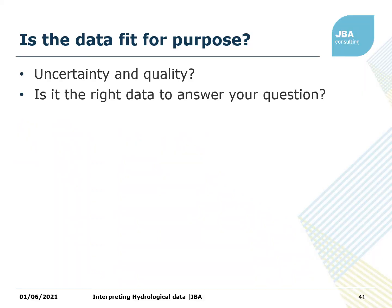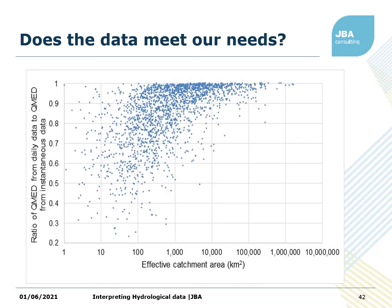What do we mean by data quality? We're looking at things like uncertainty and quality and, fundamentally, is it the right data to answer your question? The first thing is: does the data meet our needs? This is an example from a study in Canada looking at flood peaks, comparing mean daily flow data with instantaneous peak data and asking: if you only have mean daily flow data, would you get a good estimate of your flood peaks? On the y-axis is the ratio — if it's at one, the answer is yes; if not, the answer is no. What this found is that until you get to catchments of about a million square kilometres, the mean daily flow is not telling you very well about the size of peak floods. So in this case, it's not appropriate.